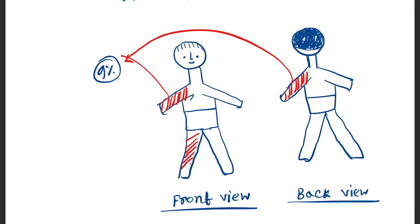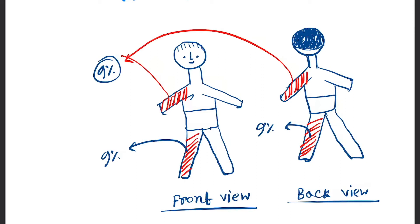Next is each front and back of the lower limb. The front of the lower limb is nine percent, and the back of the lower limb is nine percent.